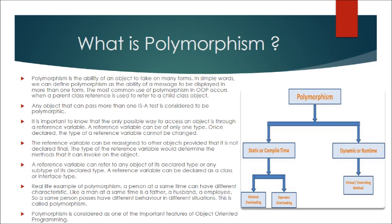The type of the reference variable would determine the methods that it can invoke on the object. A reference variable can refer to any object of its declared type or any subtype of its declared type. A reference variable can be declared as a class or interface type.